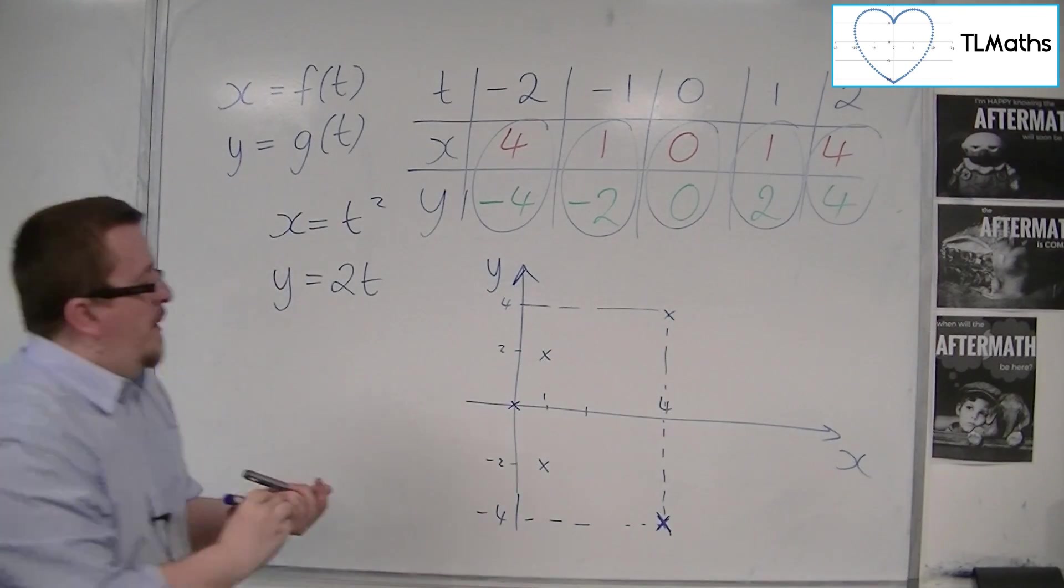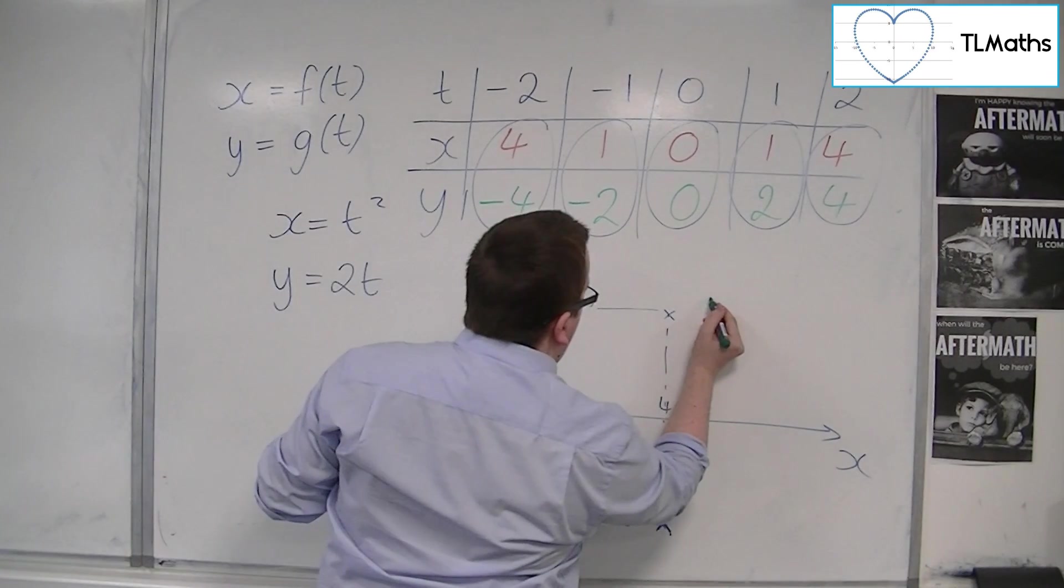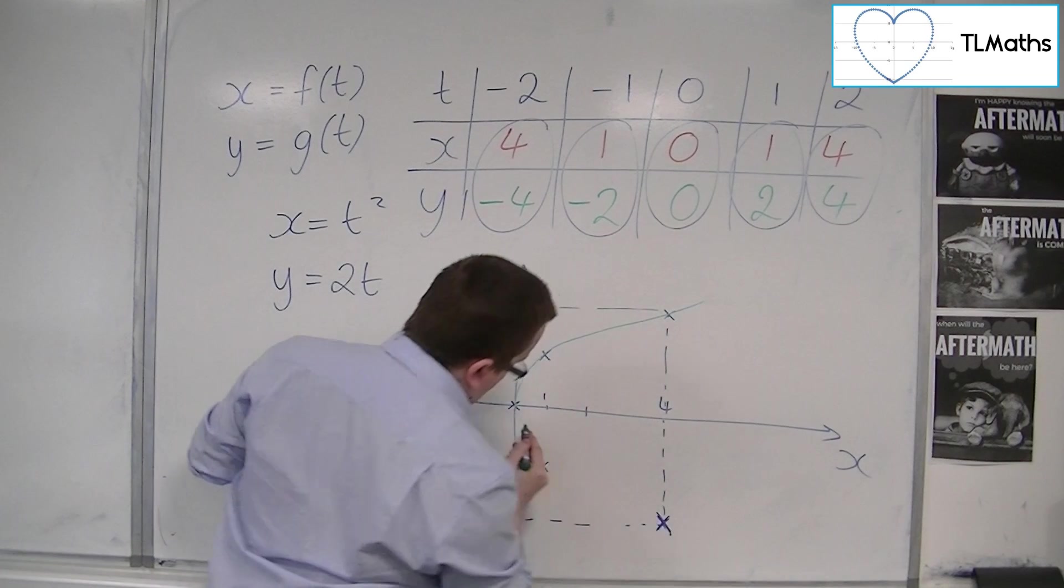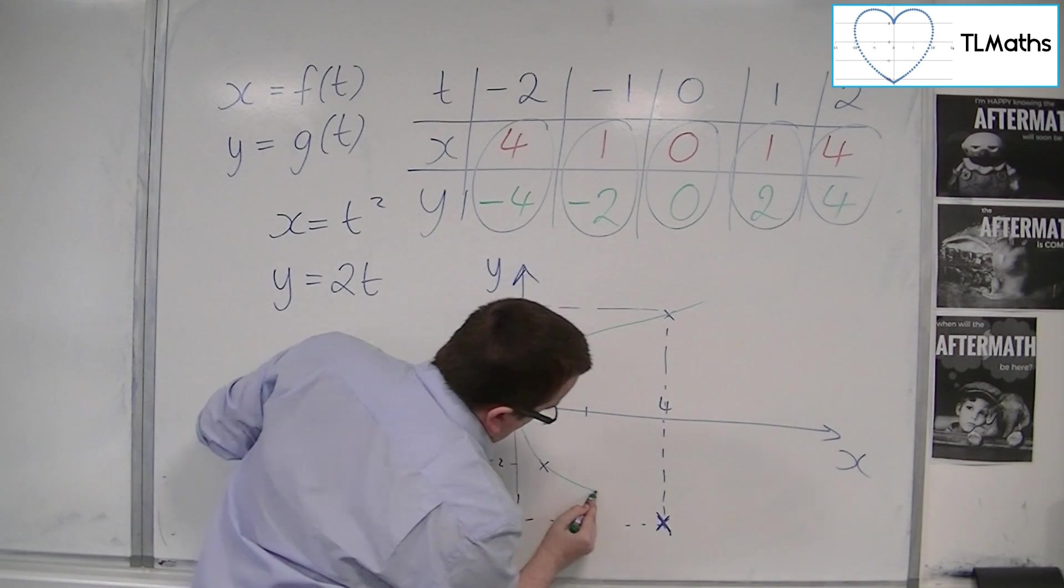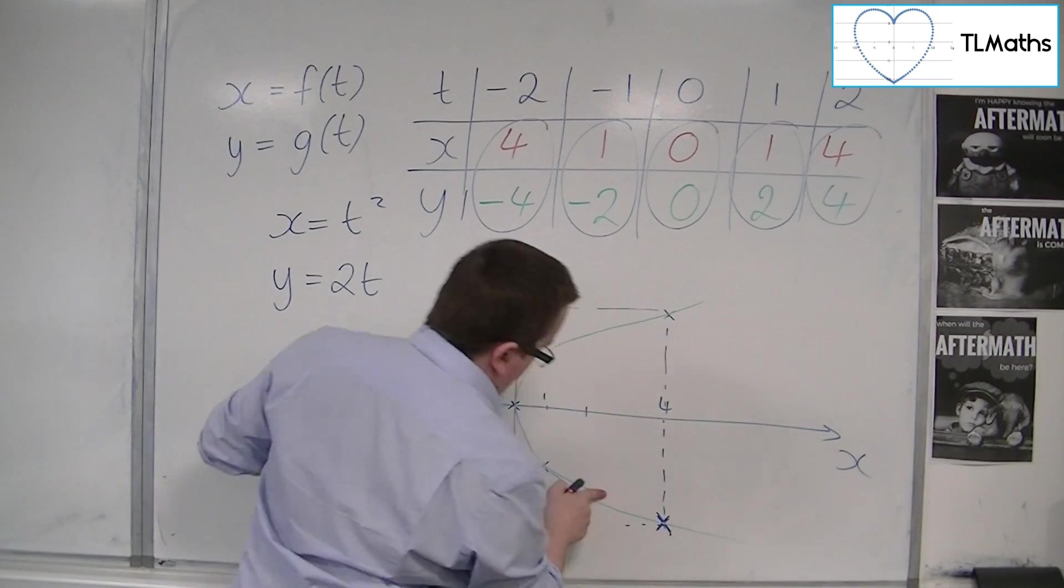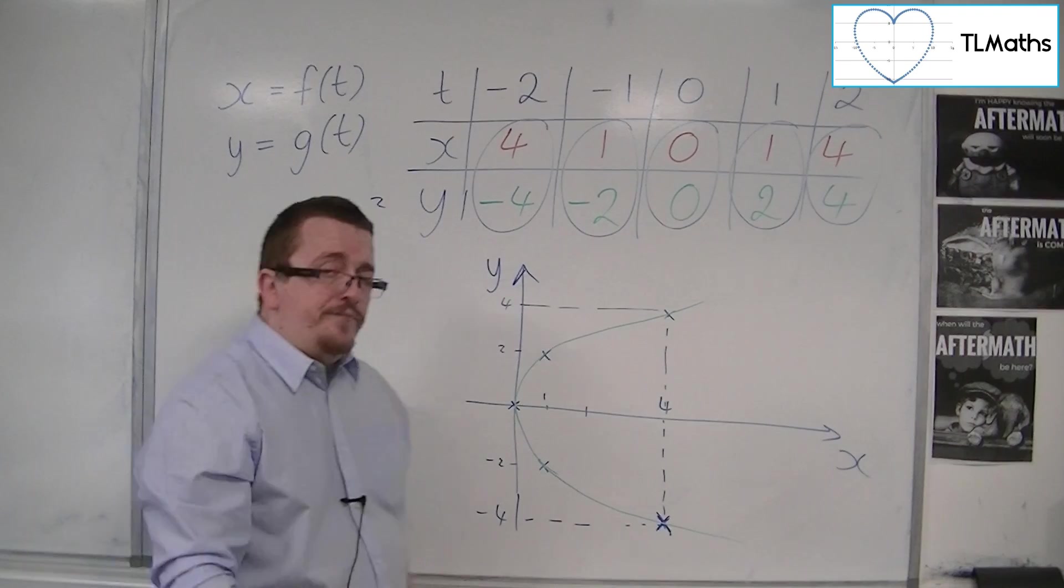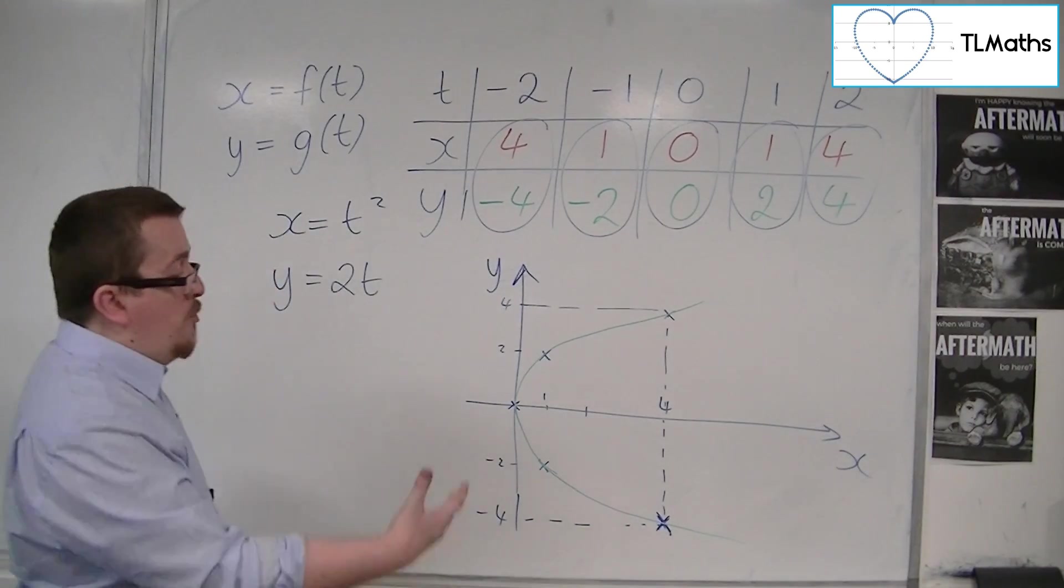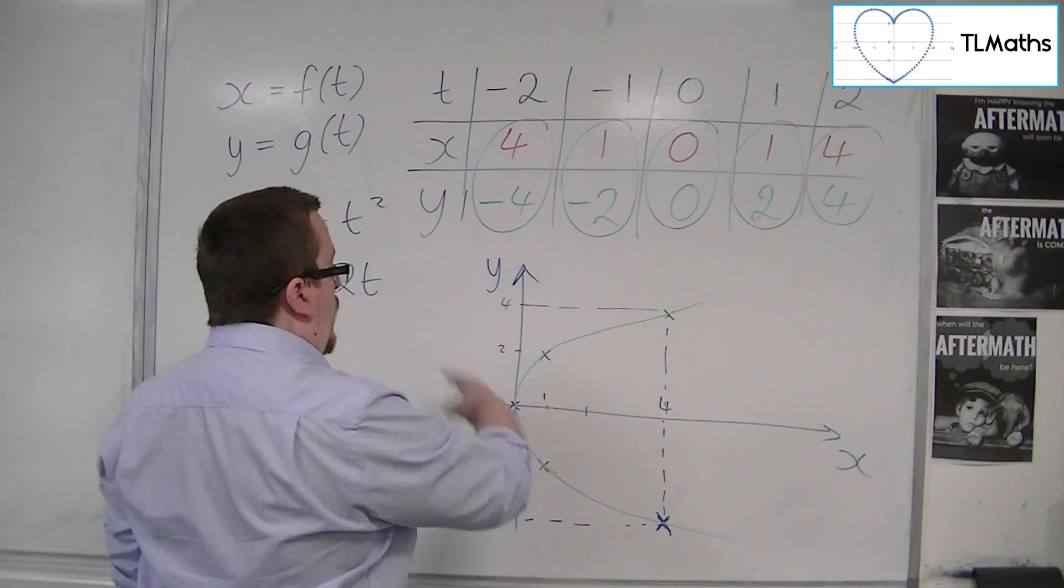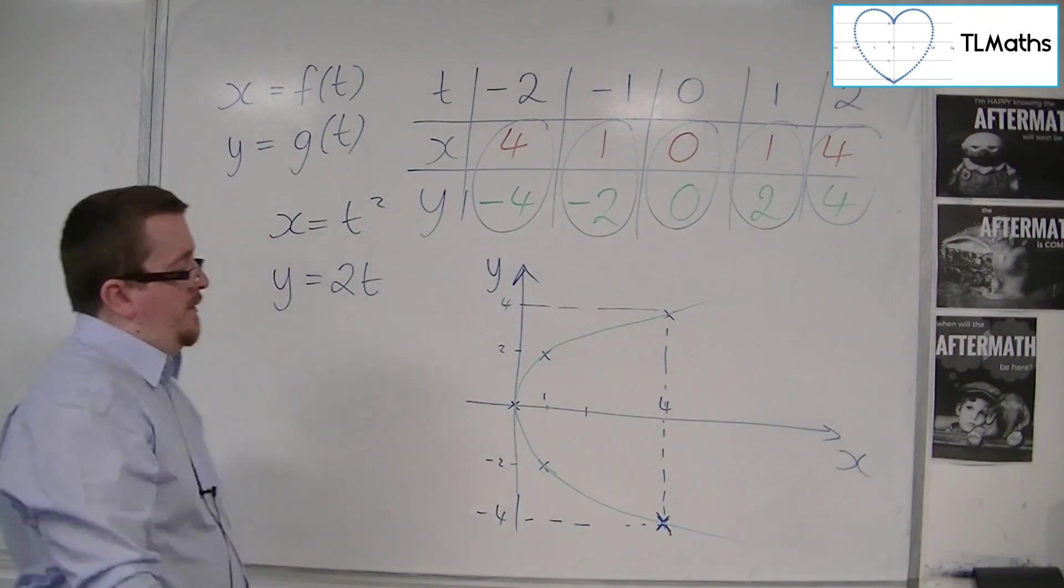And what we can see is that we have a curve that looks something like this. So what we have is actually a parabola that is on its side. It's kind of like y equals x squared, but this is more like x equals y squared.